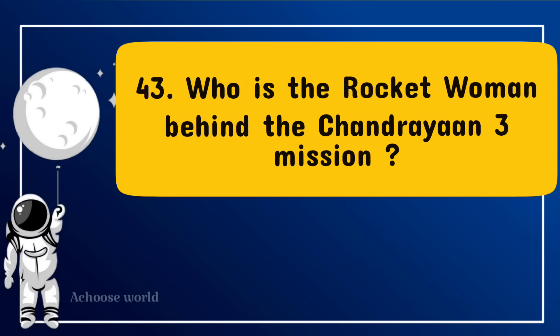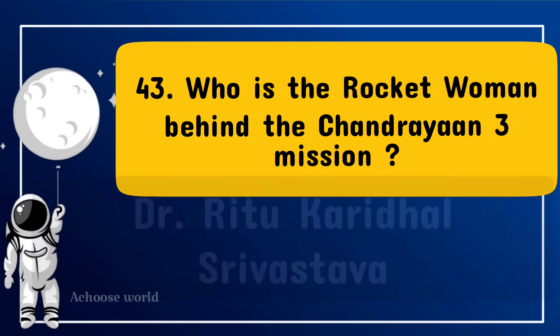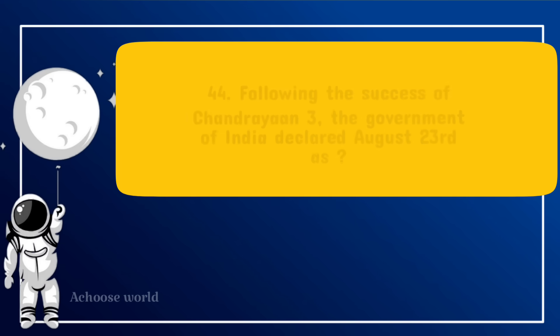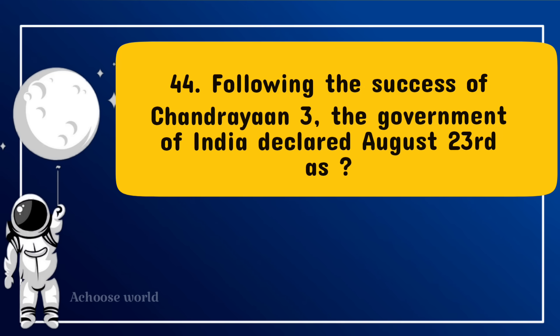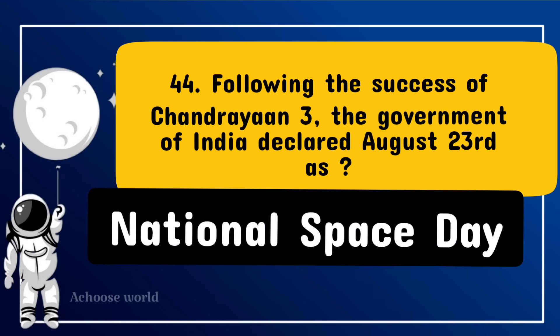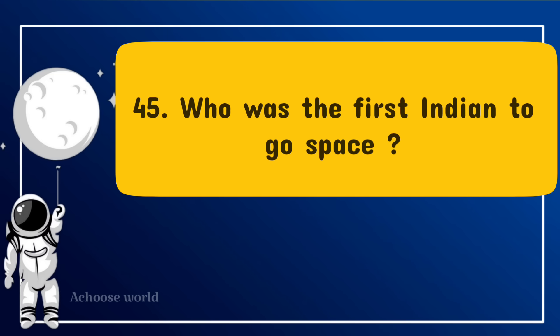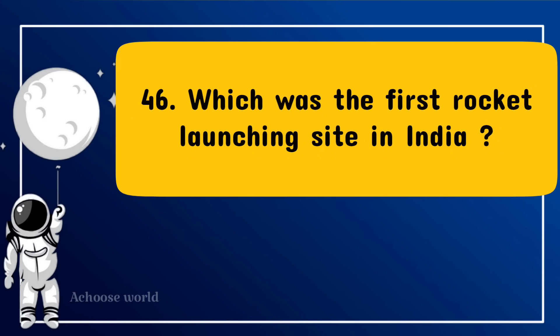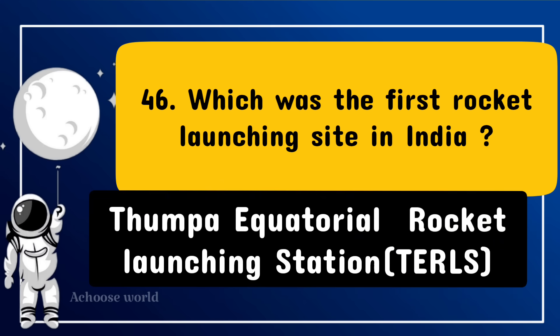Who is the rocket woman behind the Chandrayaan 3 mission? Dr. Ritu Karidhal Srivastava. Following the success of Chandrayaan 3, the government of India declared August 23 as National Space Day. Who was the first Indian to go to space? Rakesh Sharma. Which was the first rocket launching site in India? Thumba Equatorial Rocket Launching Station.